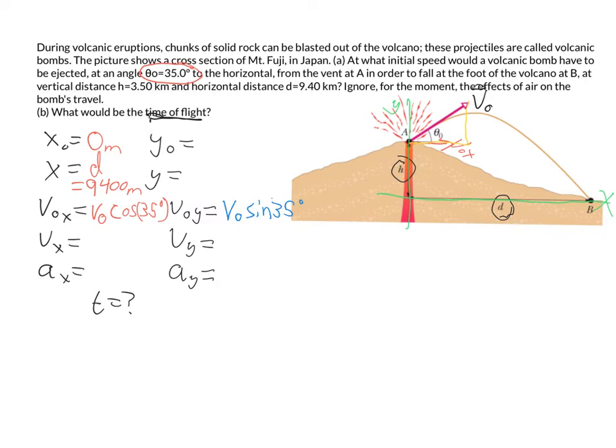But what you can do instead is you can say, while I don't know this initial velocity, I am told it takes off at an angle of 35 degrees. So that means the x component of the initial velocity here, we can express in terms of that angle. So this would be the overall initial velocity. And since it's the adjacent side, maybe we'll make a little triangle here. If I turn this into a little triangle, since it's the adjacent side, then it will be V initial multiplied by the cosine of that 35 degree angle.